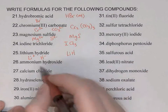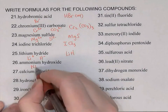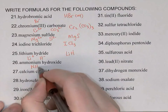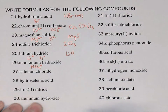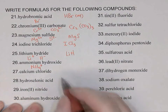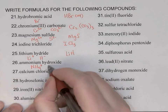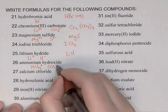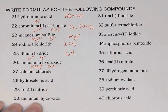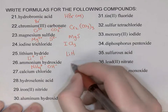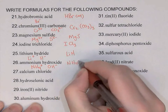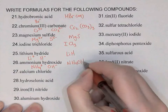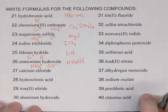Ammonium hydroxide: ammonium is a complex cation, so this is an ionic compound — NH4+. Hydroxide is a complex anion, OH-. Plus one and minus one, so NH4OH will be the formula.